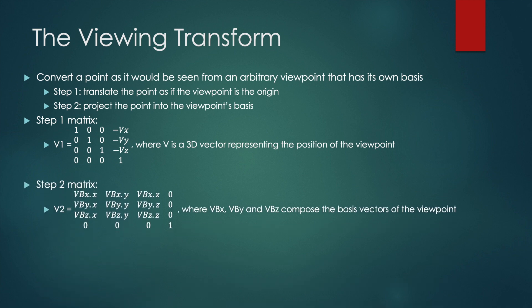Step two matrix performs the projection along each of the viewpoint's basis vectors. Here, vbx, vby, and vbz are the unit basis vectors of the viewpoint, and they are row vectors within the matrix. This ensures that the matrix vector multiplication projects the point from step one onto each of the viewpoint axes.